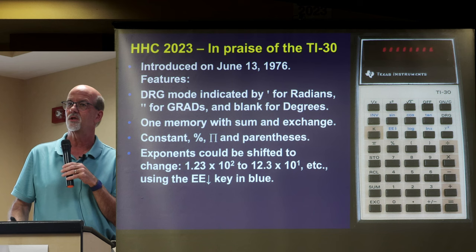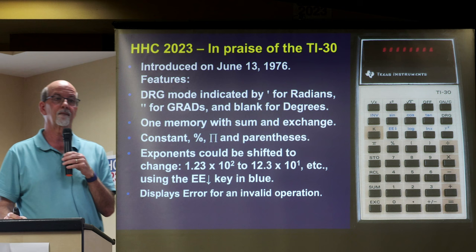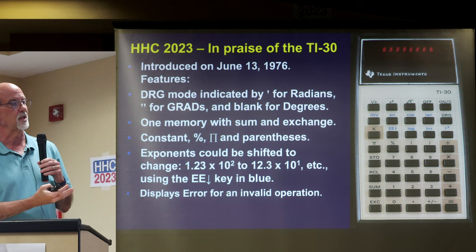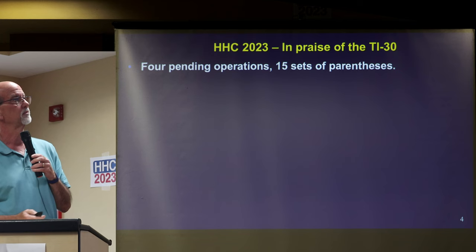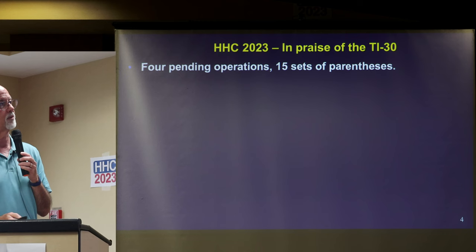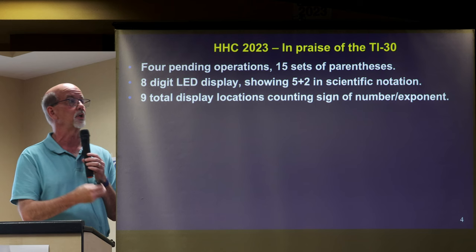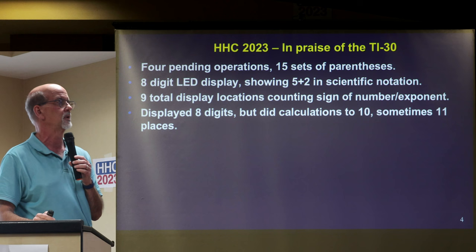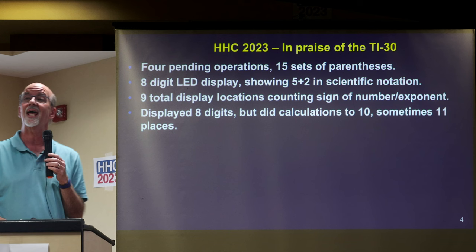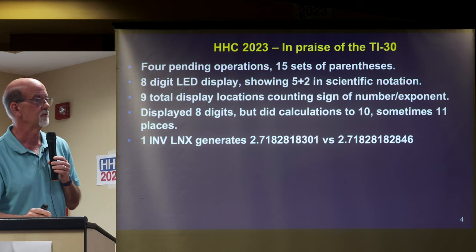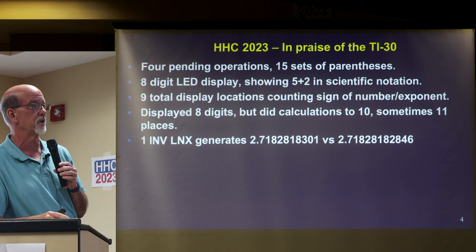That's useful for essentially manually getting the equivalent of an engineering display — it's a manual engineering mode, absolutely. When you do something wrong on this thing, it does display error, reminiscent of the 25 and others. Four pending operations, 15 sets of parentheses — I have no idea why that would be the case. It had an 8-digit LED display, 5 plus 2, fairly standard. Nine total display locations including the sign of the number, the mantissa sign, and the sign for the exponent. It displayed 8 digits, but calculations were done sometimes to 10 and 11 places, which I was very surprised to find.